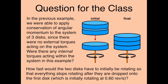Here's a follow-up. In the previous example, we applied conservation of angular momentum because there were no external torques. Were there any internal torques acting within the system — that is, torques between the discs? As a follow-up: how fast would the two discs initially have to be rotating so that everything stops rotating after they are dropped onto the first disc?